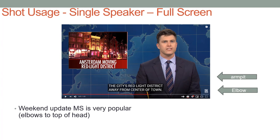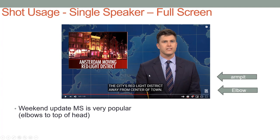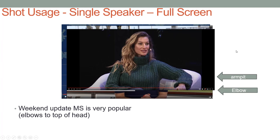What if I'm a single speaker and instead of postage stamp, I'm going full screen? Well, this is where we get our weekend update medium shot. In the classic shots, we went from medium shot — which was a waist shot — to medium close-up, which was armpits and up. But it turns out that there's a lot of shots that show the elbow up, and that's what we're seeing here. This is obviously weekend update. This is Golf Channel, elbows up.